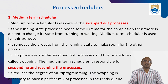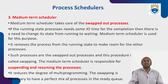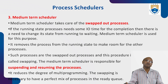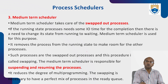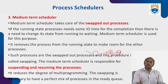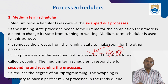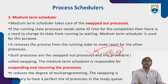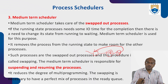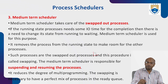The medium-term scheduler takes care of swapped-out processes. As we discussed in the states of processes: a new process comes to RAM, from RAM to running (CPU). If the process requires some I/O operations, it goes to the waiting state. From the waiting state, once I/O is available, it goes back to RAM and then to CPU. The movement among CPU, RAM, and waiting state is handled locally by the medium-term scheduler.